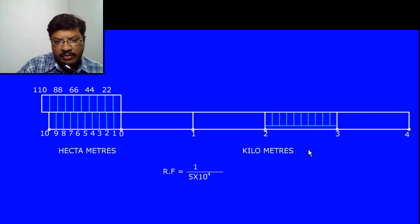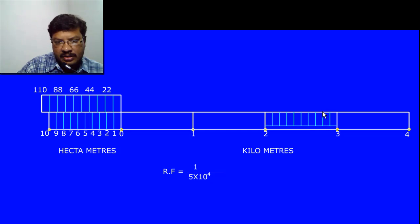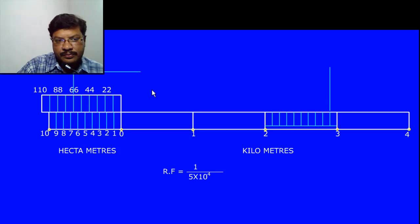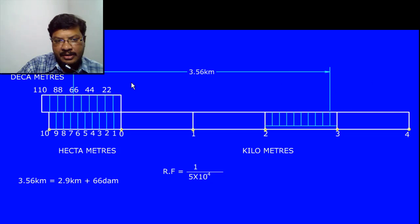Now to represent 3.56 km: 3.56 means 2.9 km plus 66 decameters. To get 2.9 km, divide the distance between 2 and 3 km — that is, the 10-hectometer distance — into 10 parts, giving 2 kilometers and 9 hectometers, which equals 2.9 km. Then add 66 decameters on the Vernier scale. The total sum is 3.56 kilometers.